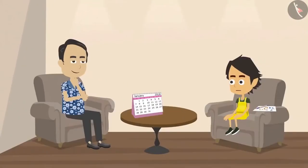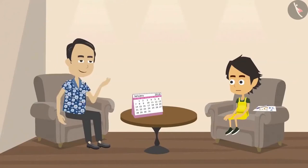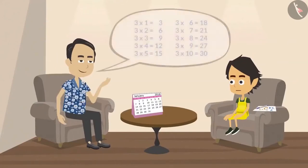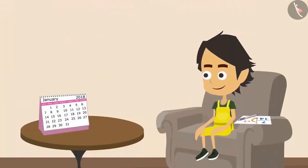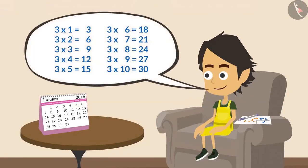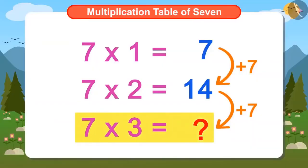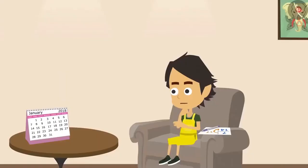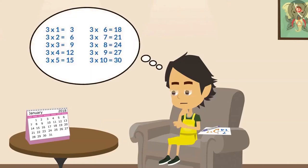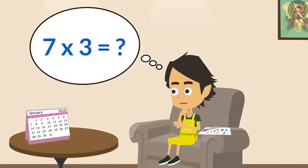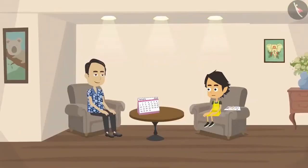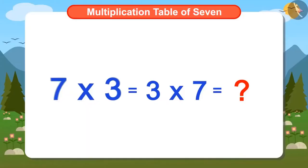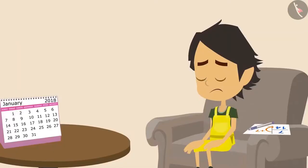Papa understood Ayushman's problem and asked him if he knows the multiplication table of 3. Ayushman tells Papa that he knows the multiplication table of 3. Then you can easily find what 7×3 is, Papa said to Ayushman. Papa told Ayushman that the answer to 7×3 would be the same as 3×7.